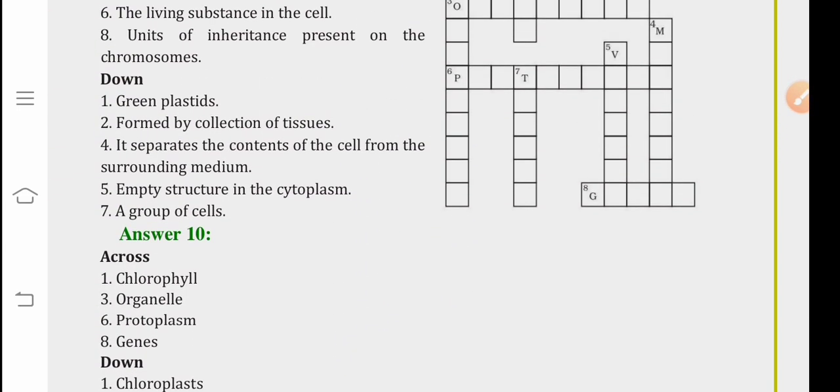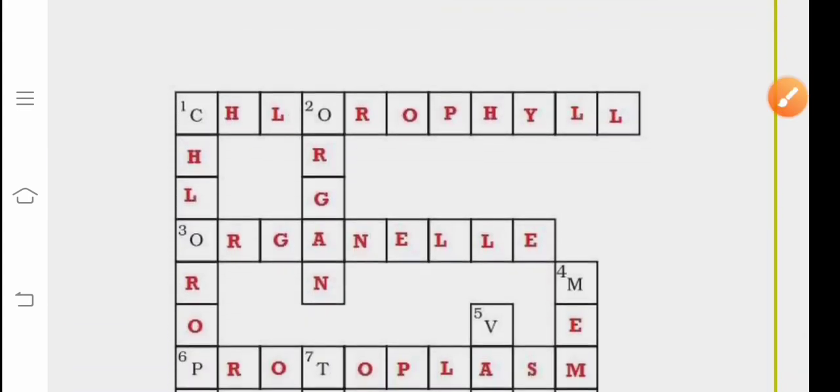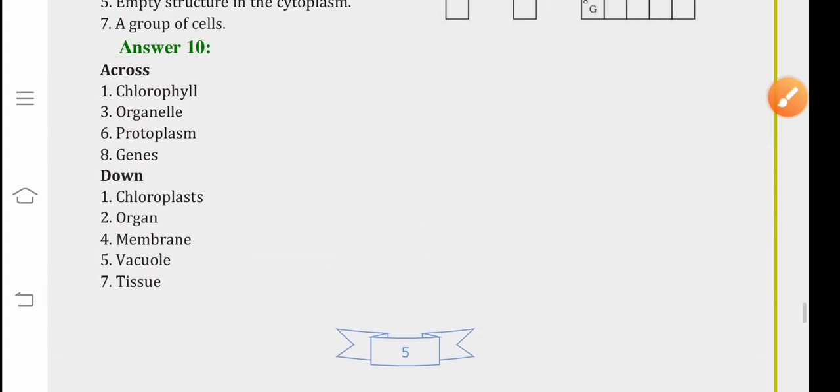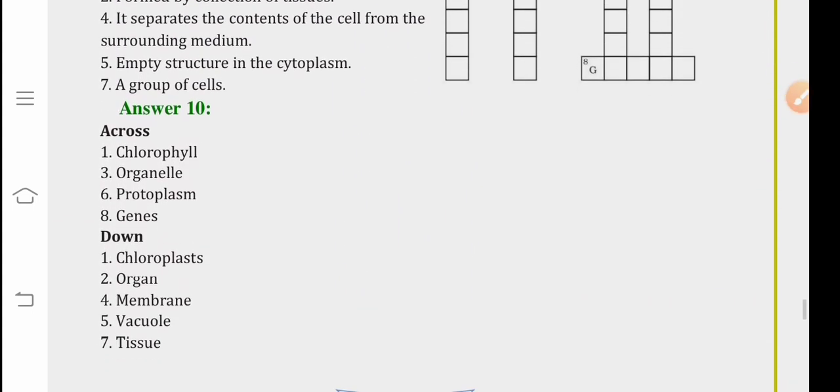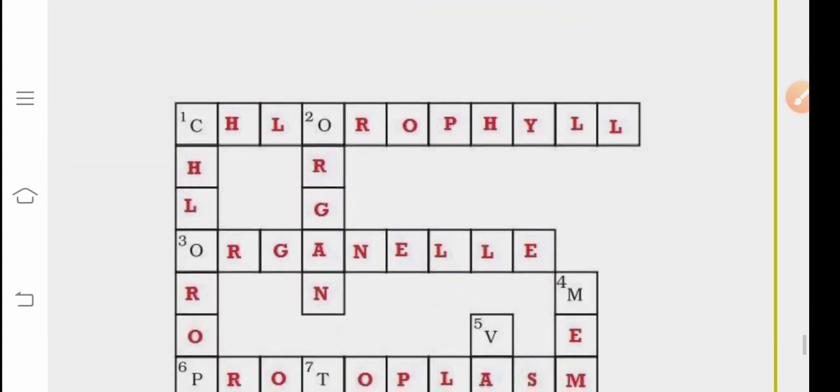Down, the clues are green plastics. Green plastics are chloroplasts. This one. Next, formed by collection of tissues. After collection of tissues, organ is formed. It is written here.